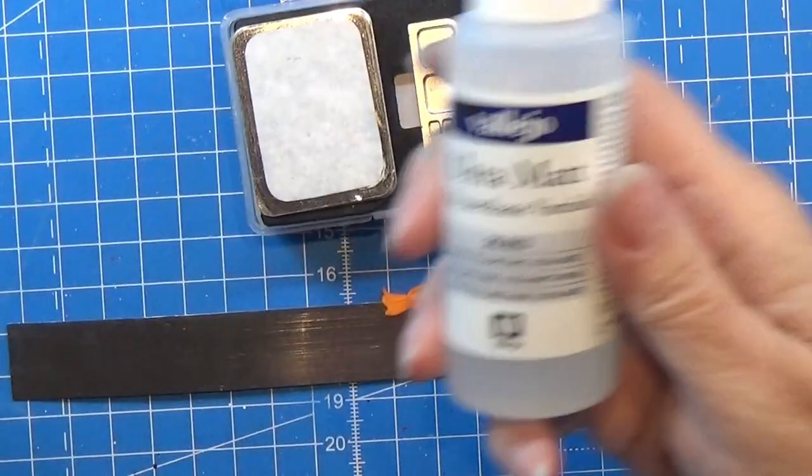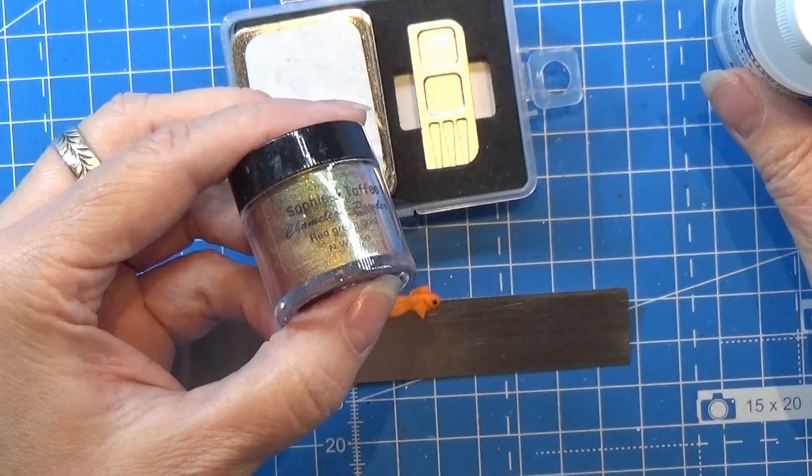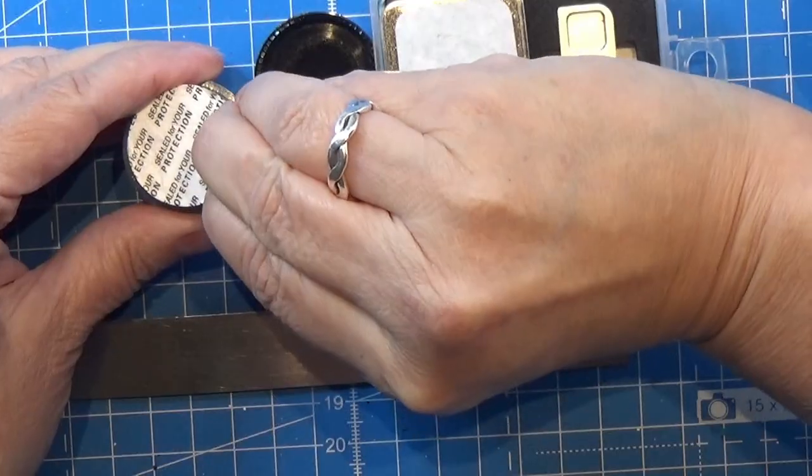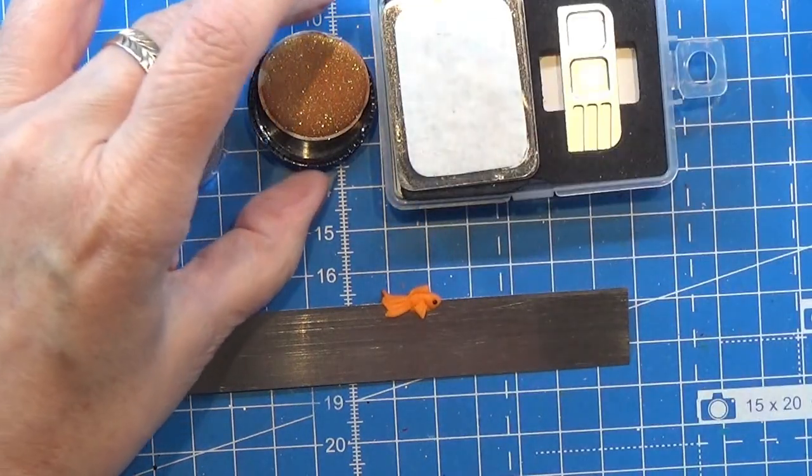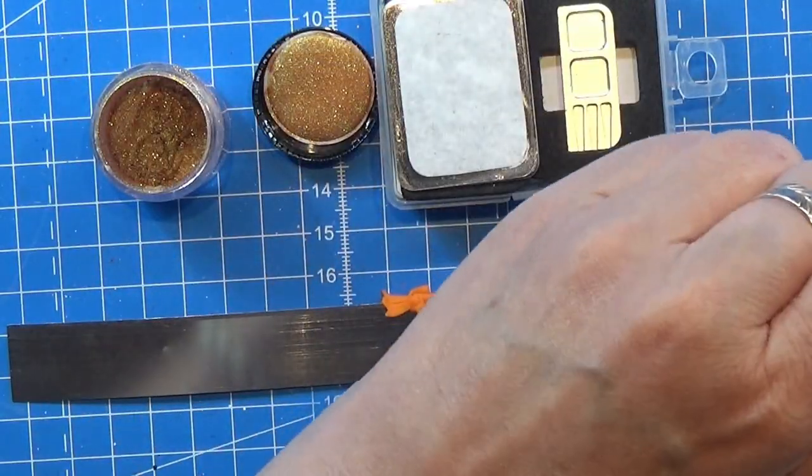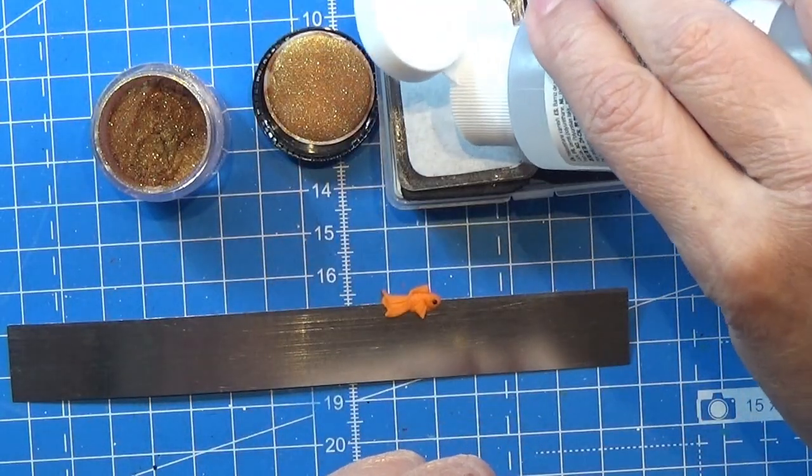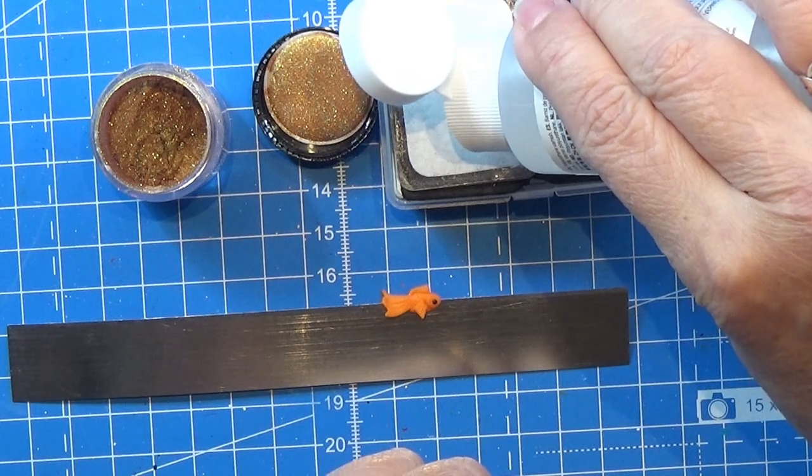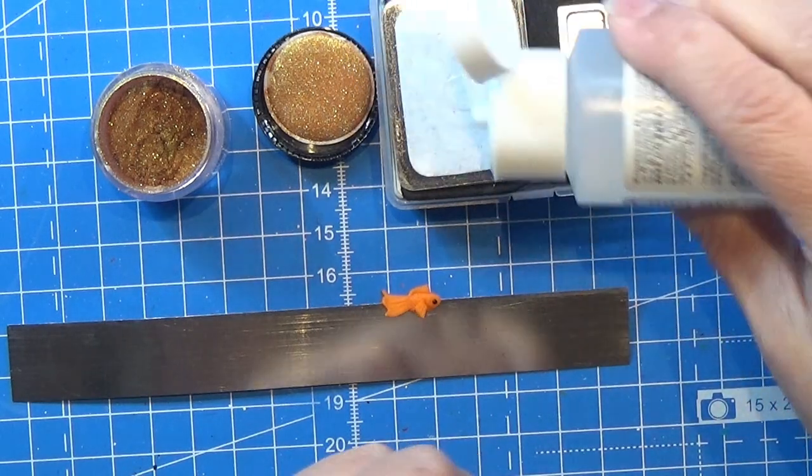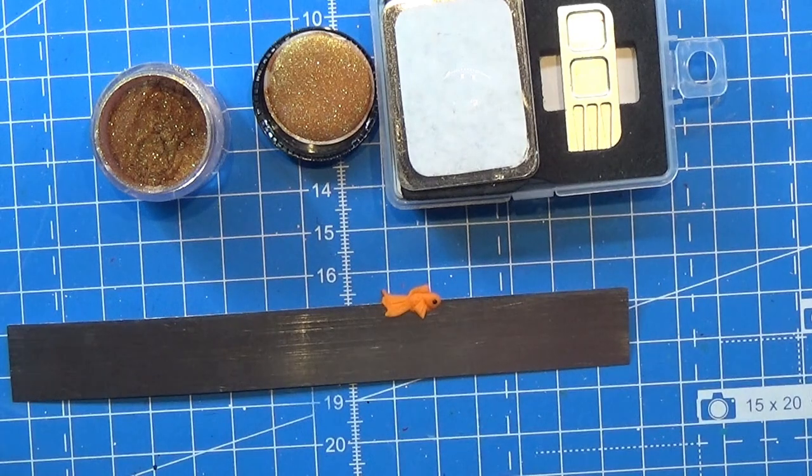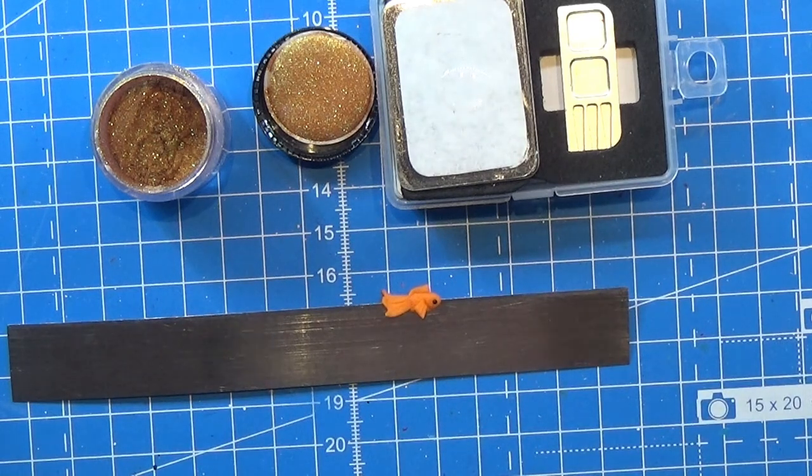I'm using a tiny bit of my Vallejo glaze and I mix that together with a tiny bit of a gold reddish Pearl Ex and I'm mixing that on my paint palette here. Then I am taking that and painting that all over the body of the little fish.